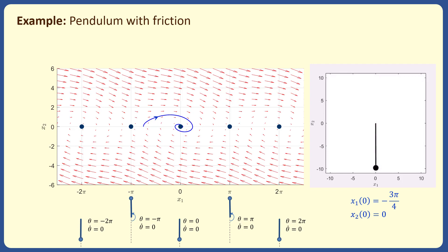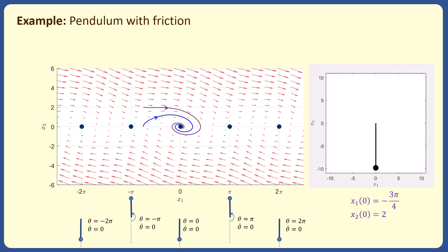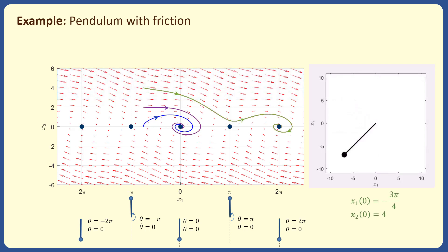Considering another initial condition with the same x1(0) but with x2(0) equals 2, we can see the pendulum oscillates again with larger oscillation than before, but the states converge again to the origin. By looking at the arrow directions for larger x2 values, if the initial angular velocity is large, the pendulum makes one or more full rotations and then converges to another equilibrium point. For example, if x2(0) equals 4, the pendulum completes one full swing and then rests at the equilibrium at x1 equals 2-pi and x2 equals 0.